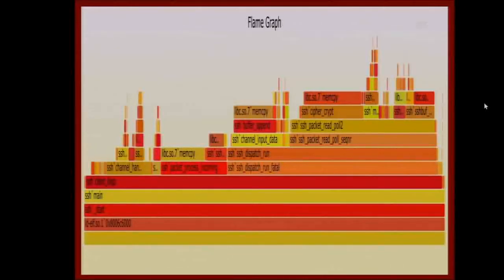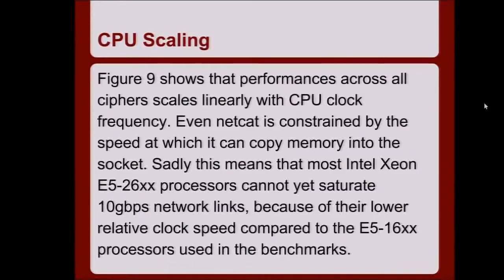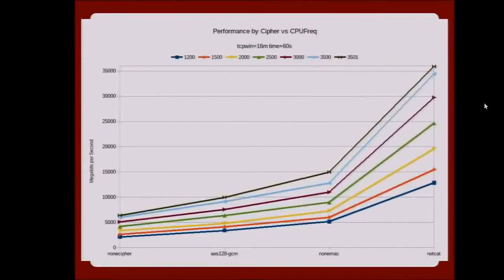The graph shows the none cipher, AES-GCM, the none-MAC version, and Netcat — measured in gigabits per second — at each processor speed: 1,200, 1,500, 2,000, 2,500, 3,500, and 3,500 with turbo boost. You can see the transfer speed you get scales exactly as you'd expect with the CPU speed of the machine. Audience question: have you seen any issues about the TCP window size being only 32 bits? The maximum window size allowed in the TCP protocol specification is one gigabyte, specifically so that the 32-bit sequence number doesn't wrap and acknowledge bytes that haven't been sent yet.